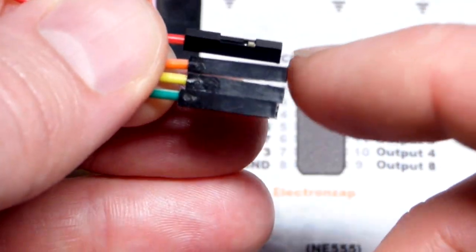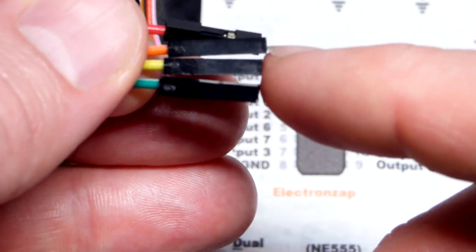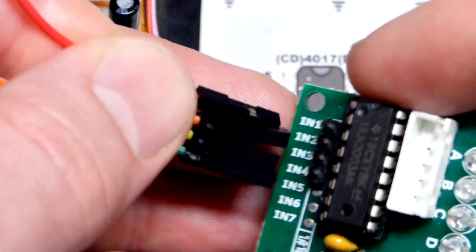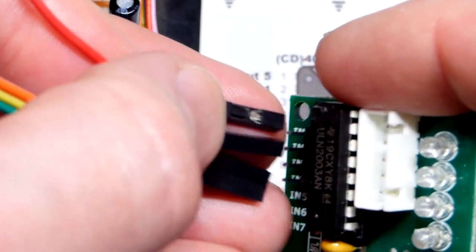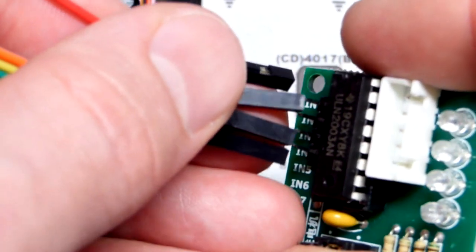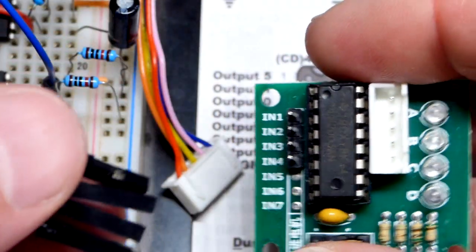So we got output 0, red. Output 1 is orange. Output 2 is yellow. And output 3 is green right there. And so it's going to be kind of tricky putting this in while I'm looking at the camera. So I'm just going to jump to the next scene.